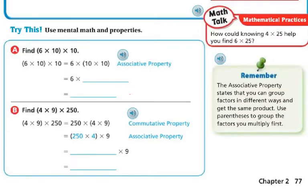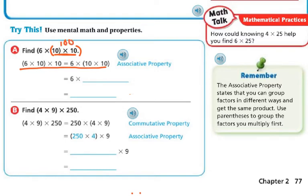On the next one, I have 6 times 10 times 10. Using the associative property, I just move my parentheses. It's easier to do like numbers, so if I put the parentheses around 10 times 10 first, I know that 10 times 10 is 100. Now I've got 100, and I still have my 6, so I do 6 times 100. 6 times 1 is 6, plus two zeros — that's 600. It's easier than doing 6 times 10 equals 60, then 60 times 10.